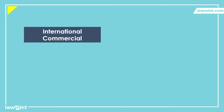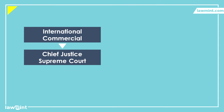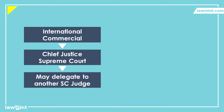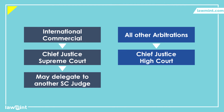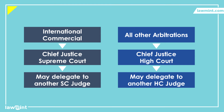If the situation requiring the intervention of the Chief Justice arises in an international commercial dispute, it will be the Chief Justice of the Supreme Court who will appoint the arbitrators, or he may delegate the task to any other judge of the Supreme Court. In other cases, it will normally be the Chief Justice of the High Court with proper civil jurisdiction over the dispute, or he may designate any other justice from the same High Court to handle the appointments. Once the arbitrator is appointed by the Chief Justice or his designate, the appointment will be final.